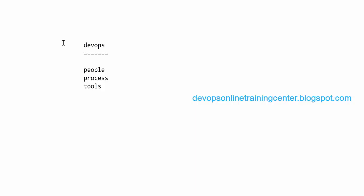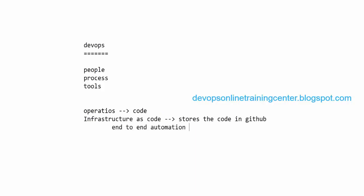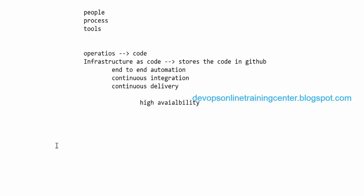Operations guys now maintain code — this is infrastructure as code. A DevOps engineer also writes code and stores it in GitHub. When you go for an interview, you need to specifically use terms like 'infrastructure as code,' 'end-to-end automation,' 'continuous integration and continuous delivery,' and 'high availability' — so they know you have genuine exposure to DevOps.